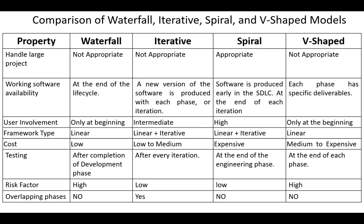The next property is user involvement. In the waterfall and V-shaped models, user involvement is only at the beginning. In the iterative model, user involvement is intermediate, while in the spiral model, user involvement is high.